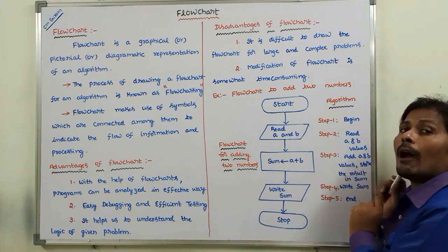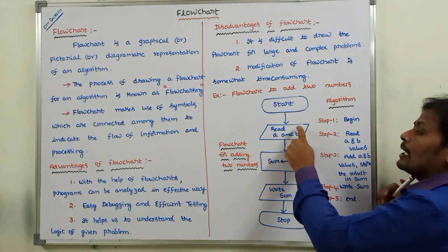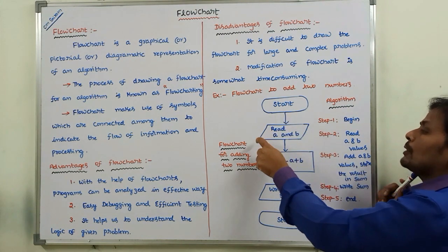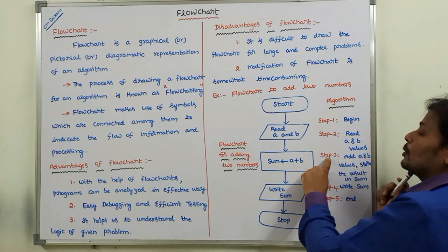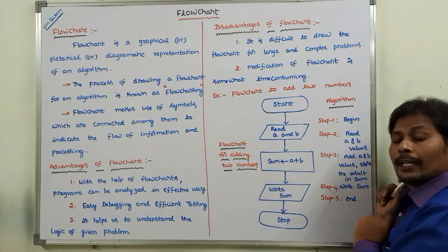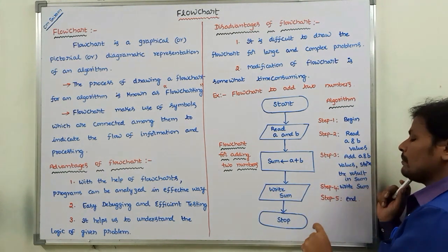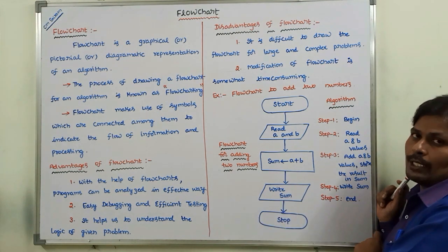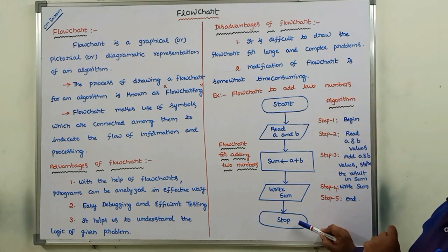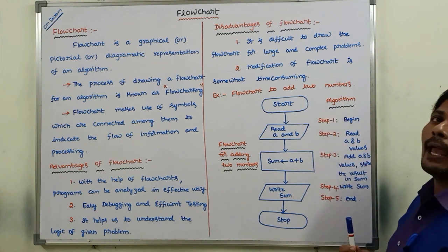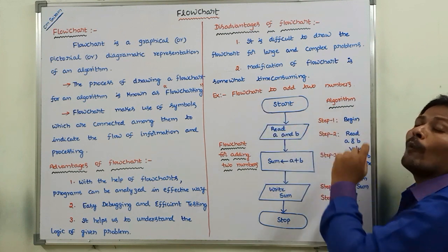Every flowchart starts with the start symbol. After that, we read the A and B values, for which we use the parallelogram symbol. To perform the arithmetic operation, we use the process symbol. After that, for writing the result, we use the parallelogram symbol again. Then we stop the flowchart. For both starting and ending the flowchart, we use the same symbol — called the terminal symbol — which has an oval shape.